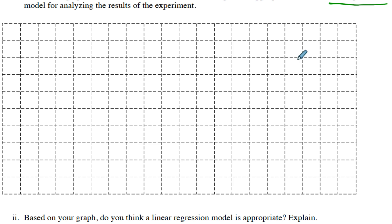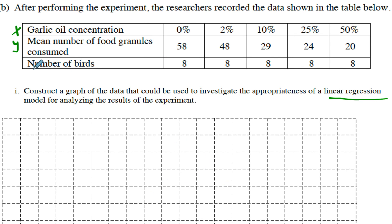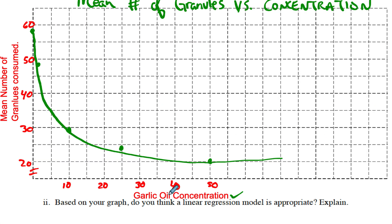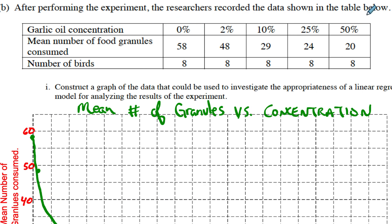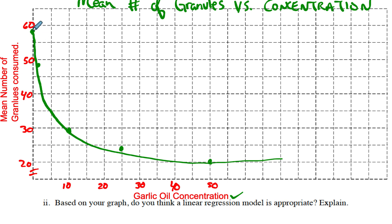There's no single right answer, but we want to use the entire graph and make sure we label each of the axes — x on the bottom, y on the side. So I've got garlic oil concentration on the bottom, going from 0 to 50, counting by 5s — that's the explanatory variable. On the y-axis, the response variable, I know I had to go up to about 60, so I started at 20. You've got to be careful not to imply that your scale changes across the graph — you can't make one interval represent 20 and another represent 5. Students always think you have to start at 0, but you don't. I went from 20 to 60 and spaced it out pretty well.